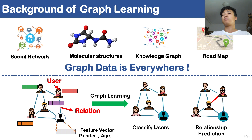Attributed graphs have rich property data attached to edges and vertices. Taking its use in social network as an example, each vertex in the graph represents a user, and each edge represents a relation between two connected users. Moreover, each vertex has a feature vector that contains attributed information of the user, such as gender. With such a graph as input, graph learning can be used to classify users or predict unknown relationships. In this work, we focus on graph neural network based graph learning methods because of their high efficiency and scalability, and they are becoming popular in industry.